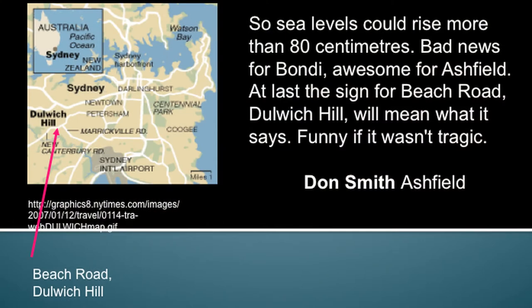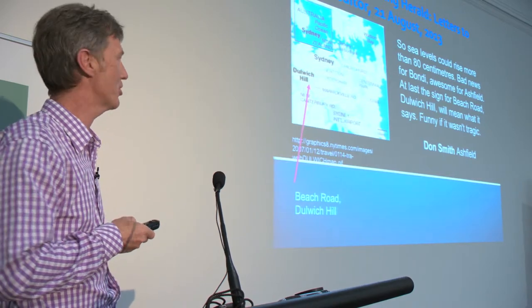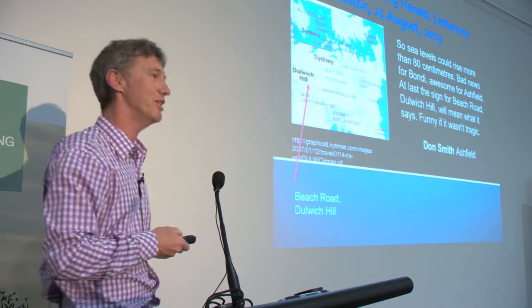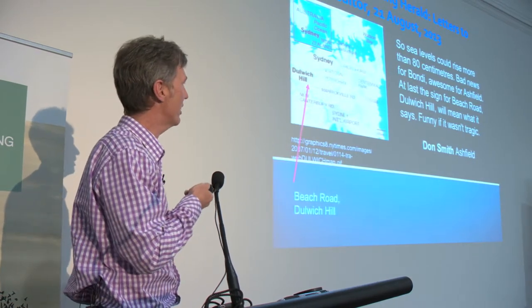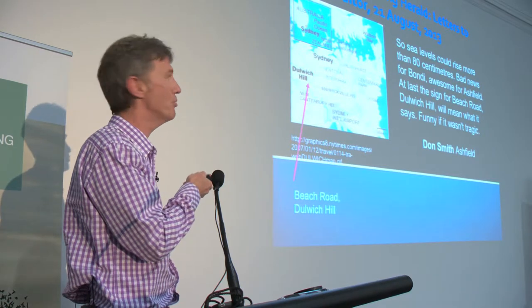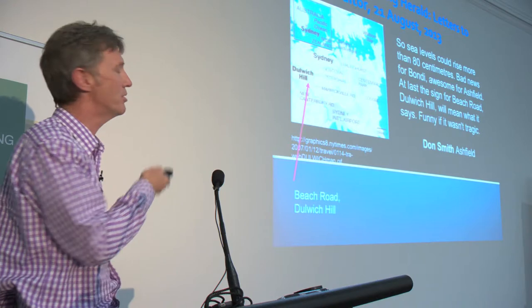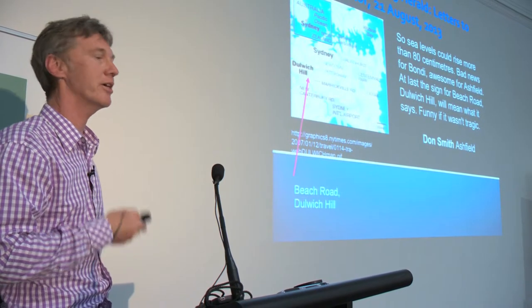At the same time, there was sea level rise by more than 80 centimetres — bad news for Bondi, which is over on the coast. And Ashfield, which is near Dulwich Hill: at last, the sign for Beach Road Dulwich Hill will mean what it says. Now, Dulwich Hill is 13 kilometres in from the coast. It's nowhere near the beach — funny if it wasn't tragic. With an 80-centimetre rise it's not likely to flood, but imagine some of the other projections — the 10-metre sea level rise. Sydney Airport, the city centre, coastal suburbs would be in a lot more trouble before Dulwich Hill ends up being flooded.